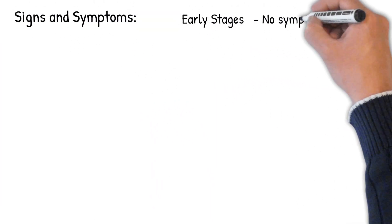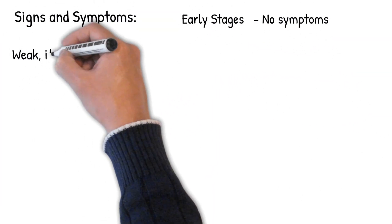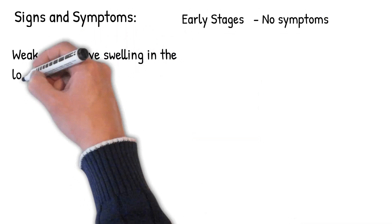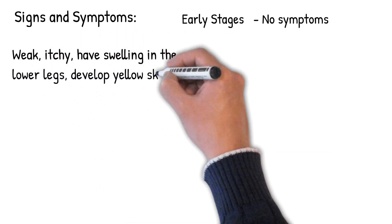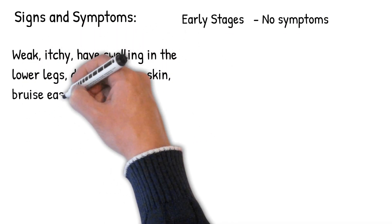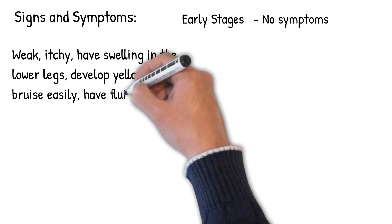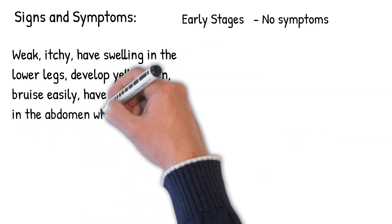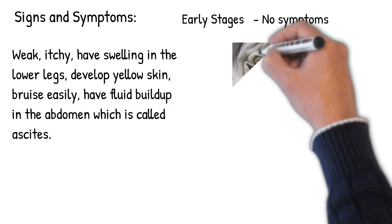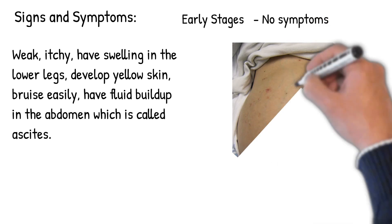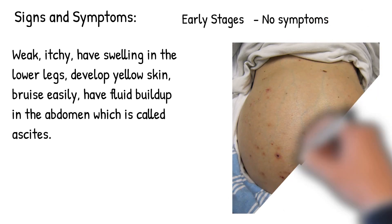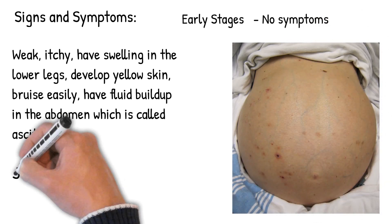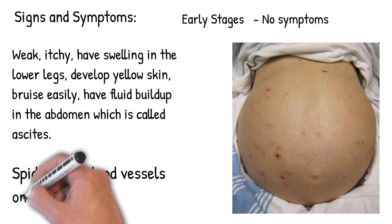Signs and symptoms: In early stages, there are no symptoms. As the disease worsens, a person may become tired, weak, and itchy, have swelling in the lower legs, develop yellow skin, bruise easily, have fluid buildup in the abdomen which is called ascites, or develop spider-like blood vessels on the skin.